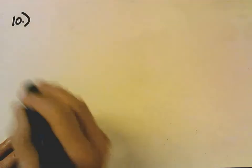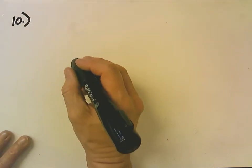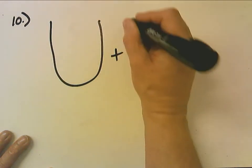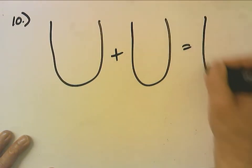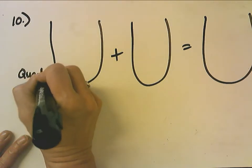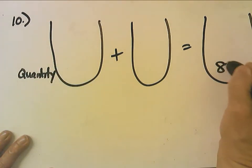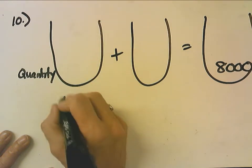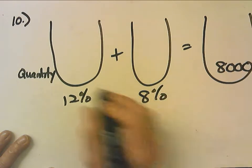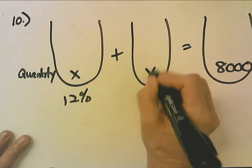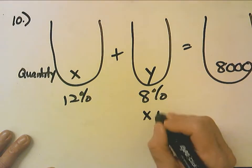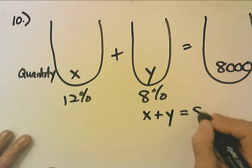So number 10 says Amy invests part of 8,000. So I know she invests a total of 8,000. So this is my quantity. She invests a total of 8,000. Part at 12%, part at 8%. I don't know how much at 12. I don't know how much at 8. So my quantity equation is X plus Y equals 8,000.